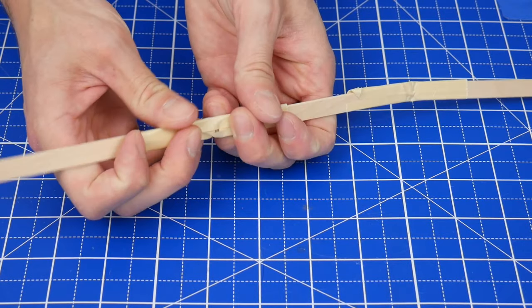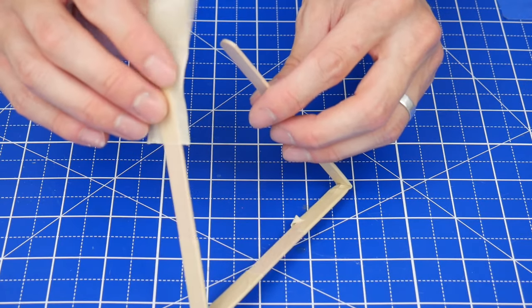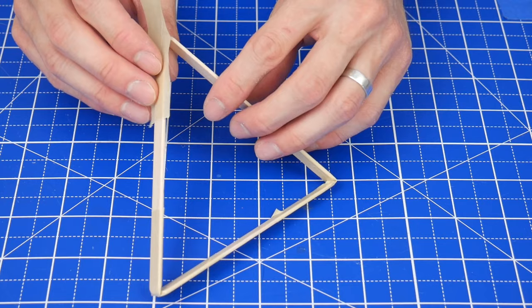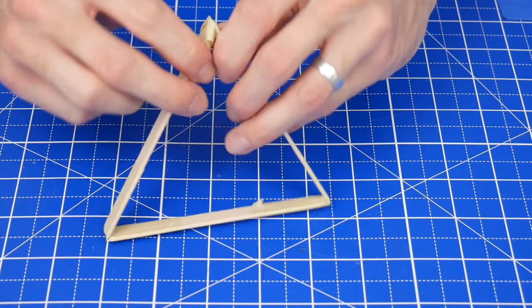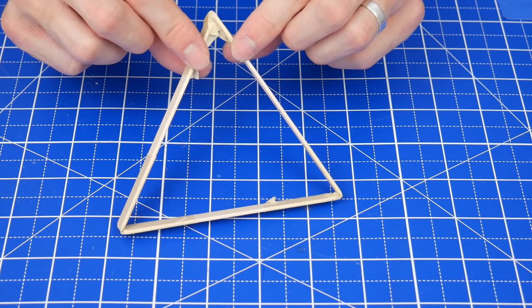Repeat one more time with a third craft stick, then using the same taping technique bring the three craft sticks together into a triangle shape, fold that tape over, and then fold the edges around. Repeat one more time.